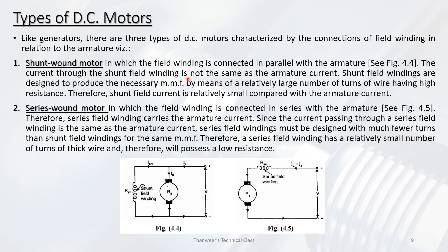DC motors and generators are classified into three types: shunt-wound motor, series-wound motor, and compound motor — and correspondingly, shunt-wound generator, series-wound generator, and compound generator.